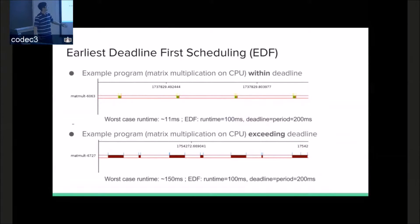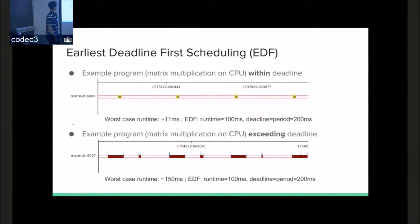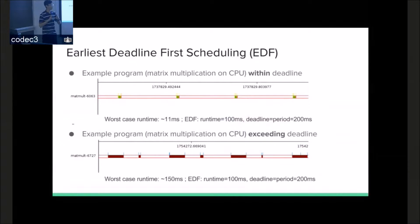Here is a graph indicating how EDF tasks run — whether they stay within their deadline or extend over. The x-axis is time, color means the process is executing, no color means it's not doing anything. This was done using matrix multiplication. On the top graph, the matrix multiplication stayed within its deadline. The worst-case execution time was around 11 milliseconds, and I gave it a runtime of 100 milliseconds, so its allotment is 100 milliseconds. It's nice and periodic.